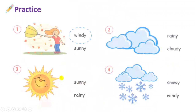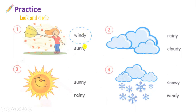Next, you will have an exercise to practice. The first one, number 2 to number 4, you will have 30 seconds to see. Bài tập này, chúng ta sẽ quan sát các bức tranh và các từ để lựa chọn từ phù hợp với các bức tranh. Number one is an example for you. Chúng ta nhìn vào bức tranh thứ 1 và chúng ta sẽ thấy có 2 từ là windy và sunny.